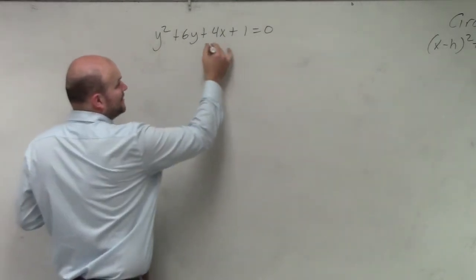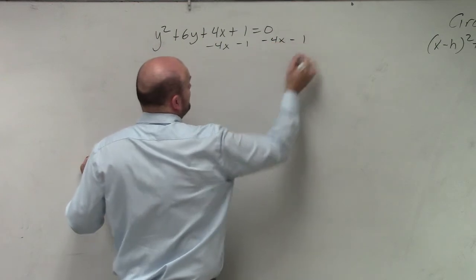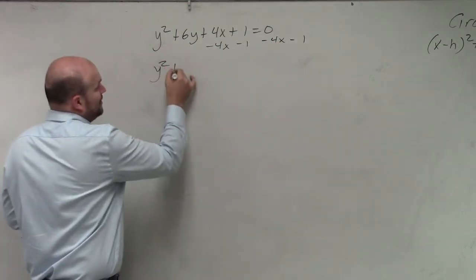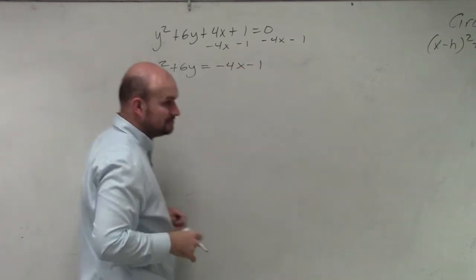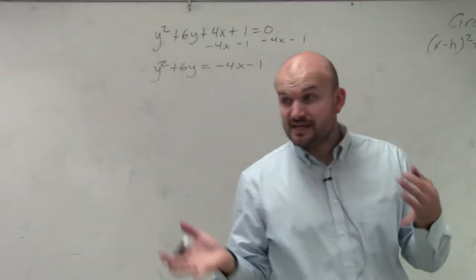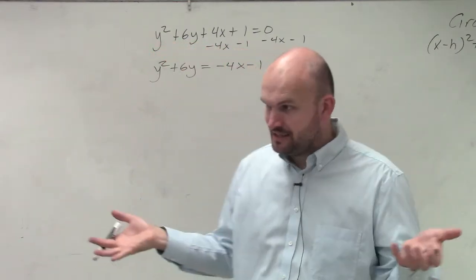First thing I'm going to do is get rid of everything on both sides, or get the x's onto the other side. So now I have y squared plus 6y equals negative 4x minus 1. The first thing is, just like your formula, if you want x's on one side, y's on the other side, then separate them.